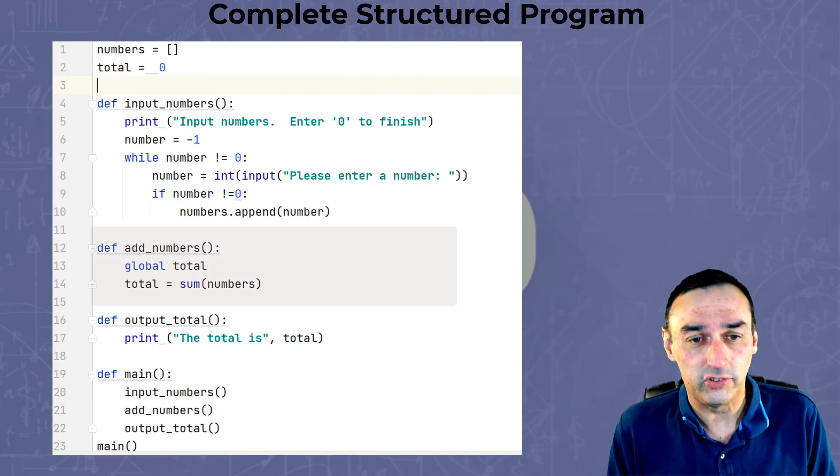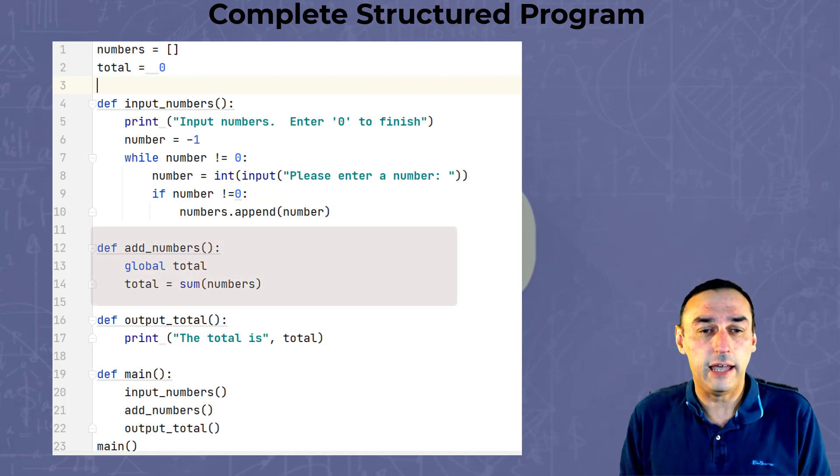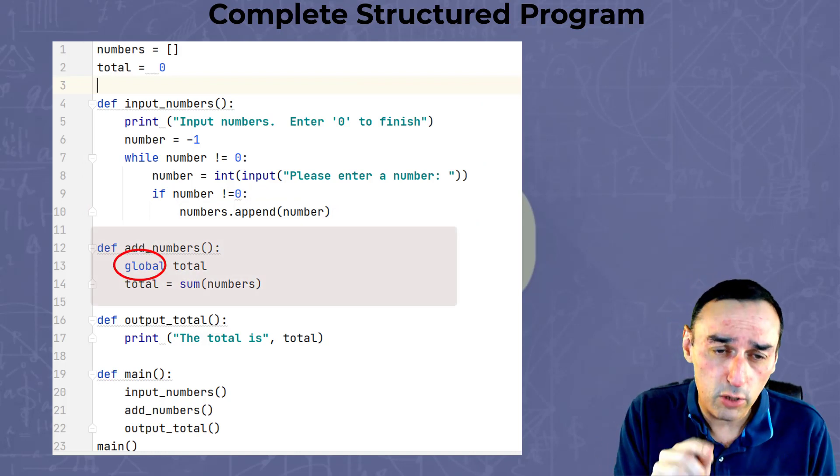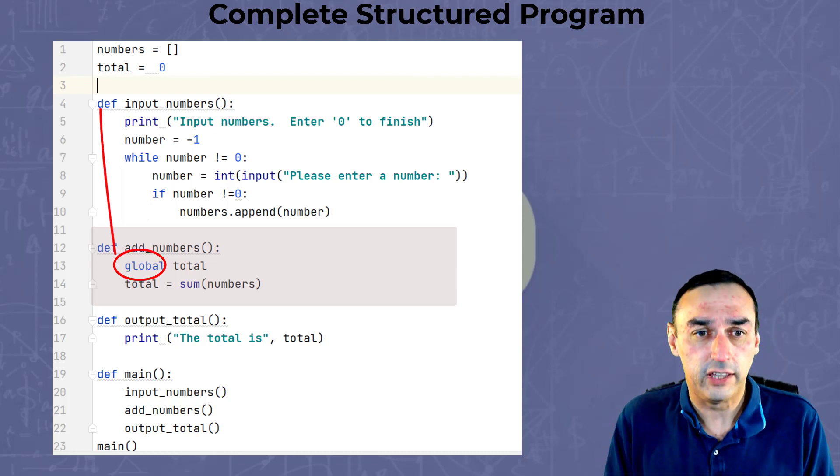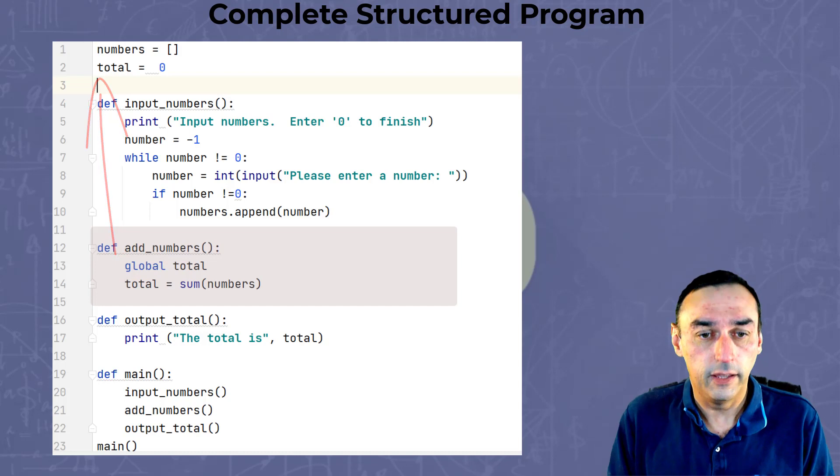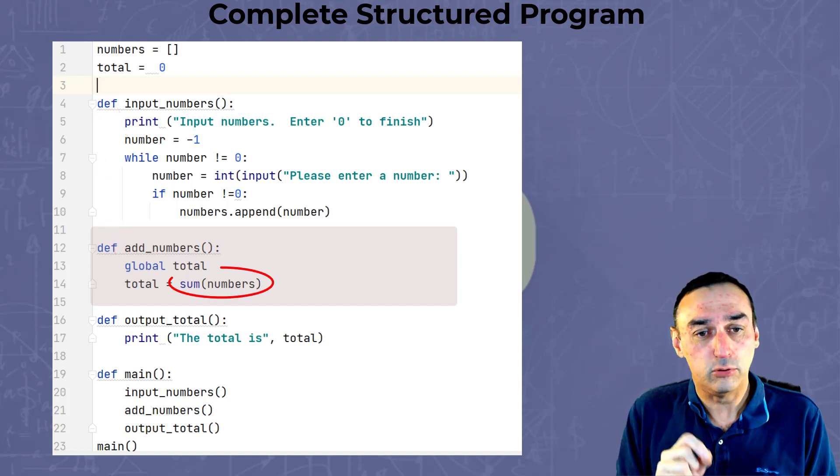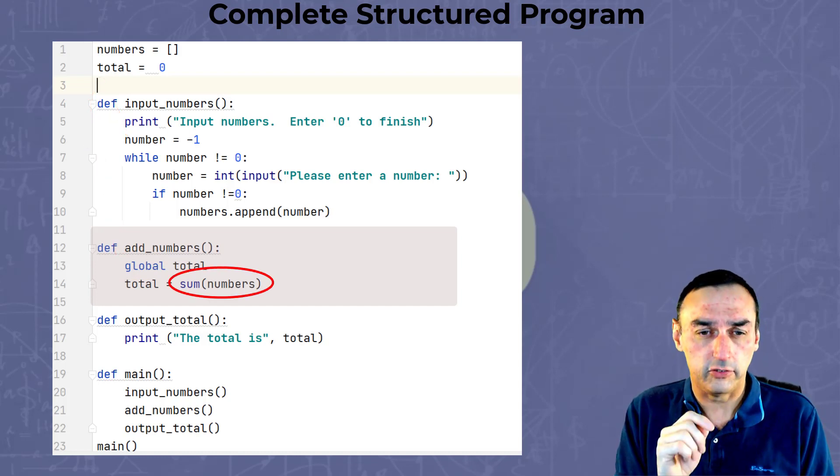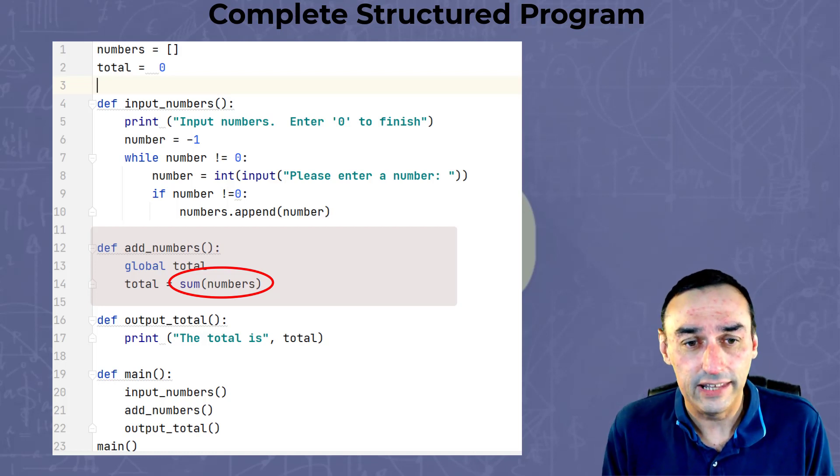The next function, which is add_numbers, simply adds or sums up the total variable and numbers. Now we use the global command there to say we're referring to a global variable, as opposed to the local variable. We then take that variable and equals it to the sum using the function sum to add up all the numbers in the numbers list.